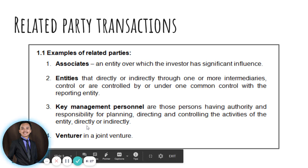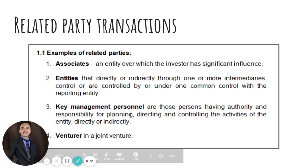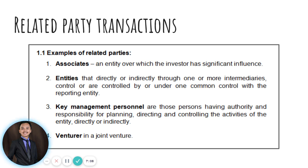Related parties also include those entities that directly or indirectly through one or more intermediaries control or are controlled by, or are under common control with, the reporting entity. Related parties also include key management personnel — those persons having authority and responsibility for planning, directing, and controlling the activities of the entity, including any executive or non-executive director. Venturers in a joint venture are also considered related parties, including subsidiaries of the joint venture.